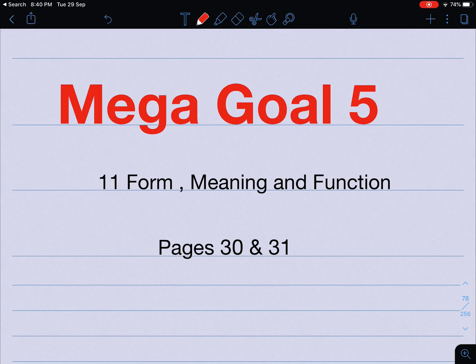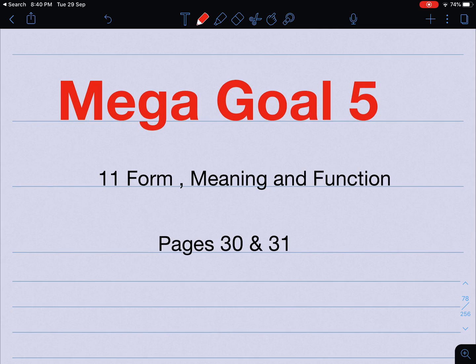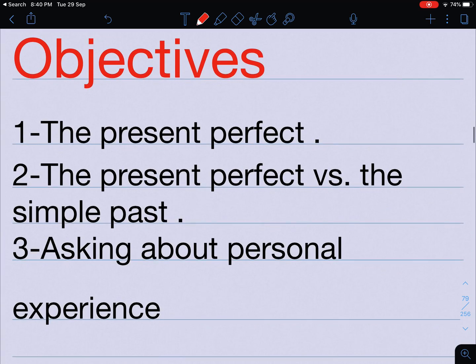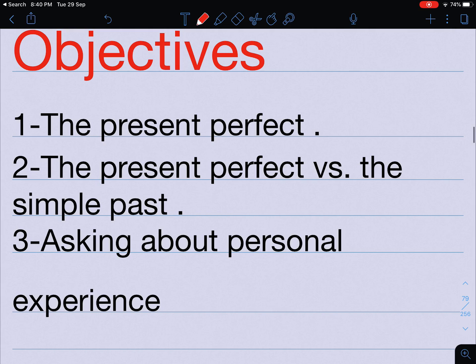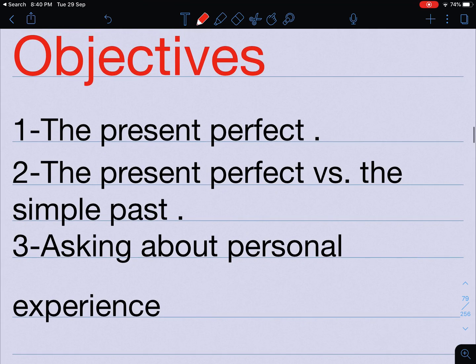Hello everybody. Mega goal number 5, third secondary, and this is the last lesson — lesson 11: form, meaning, and function on pages number 30 and 31. Let's take a look at the objectives. The first one is the present perfect. The second objective is the present perfect versus the simple past, and the last one is asking about personal experience.